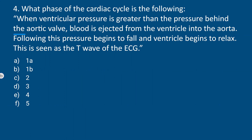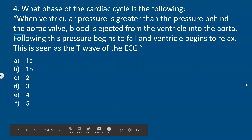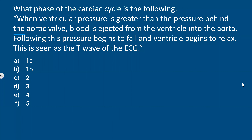Cardiac cycle phase question: When ventricular pressure exceeds the pressure behind the aortic valve, blood is ejected from the ventricle into the aorta. Following this, pressure begins to fall and the ventricle begins to relax — this is seen on the T-wave of the ECG. This is a niche question but knowing the cardiac cycle diagram helps answer all related questions.